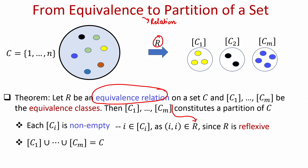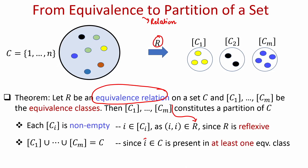The second requirement from the partition is that the union of the various subsets should give me back the original set. My claim is that if I take the union of all M equivalence classes I will definitely get back my original set C. This is because you take any element i from the set C — it is bound to be present in at least one equivalence class, specifically in the equivalence class of i itself, namely C_i. So if I take the union of these M equivalence classes I will not be losing any element of set C.